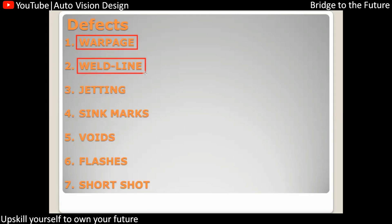Weld line occurs whenever there is a separation of flow — a line becomes visible on the physical part, something like a flow mark. Jetting is caused by turbulent flow; it produces a very visible flow line on the part. This defect occurs due to turbulent flow in injection molding through the runner and gates.